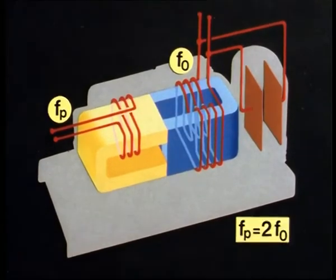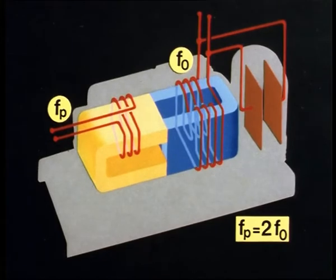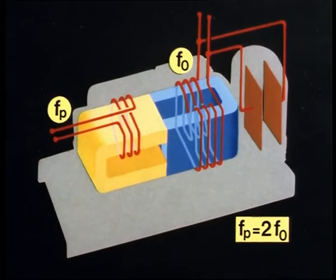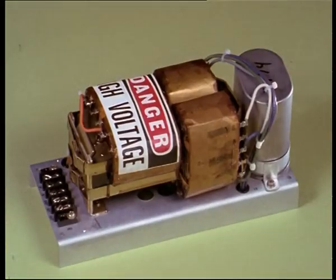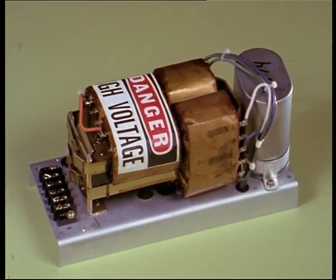Again, for the optimum case is valid fp equals 2f0. According to this scheme of electrical excitation, this so-called paraformer is constructed. On the left-hand side, the control winding. On the right, the oscillatory circuit.